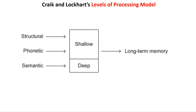The levels of processing model basically says that the more you process information, the more that information is going to be stored in the long-term memory. To depict this, they used a model — this is an adapted version of Craig and Lockhart's model — and they basically said that when we have information, we can process it in three ways: two shallow ways and one deep way.